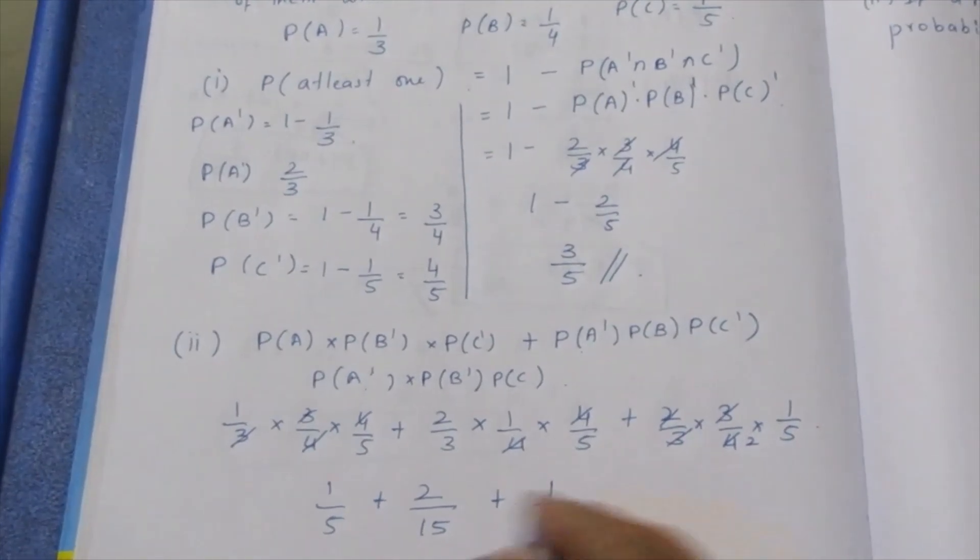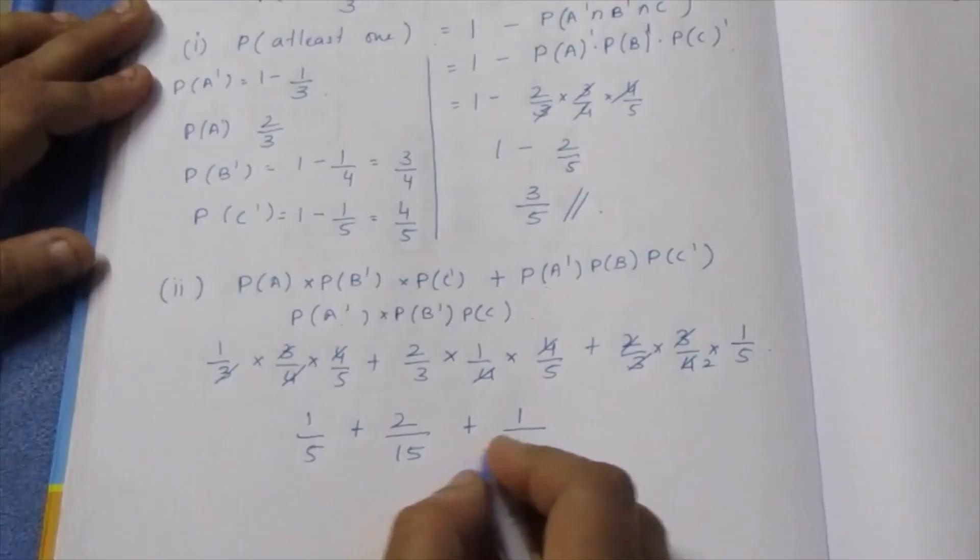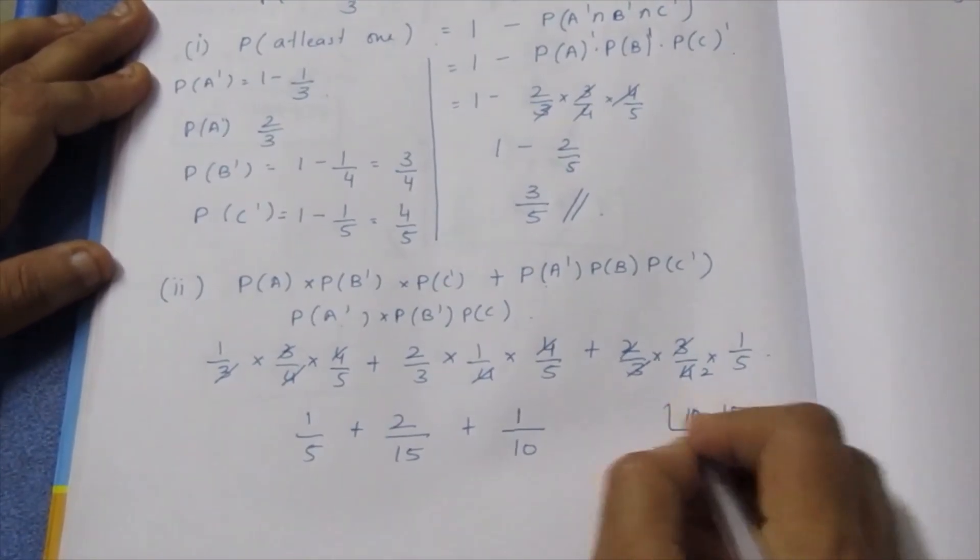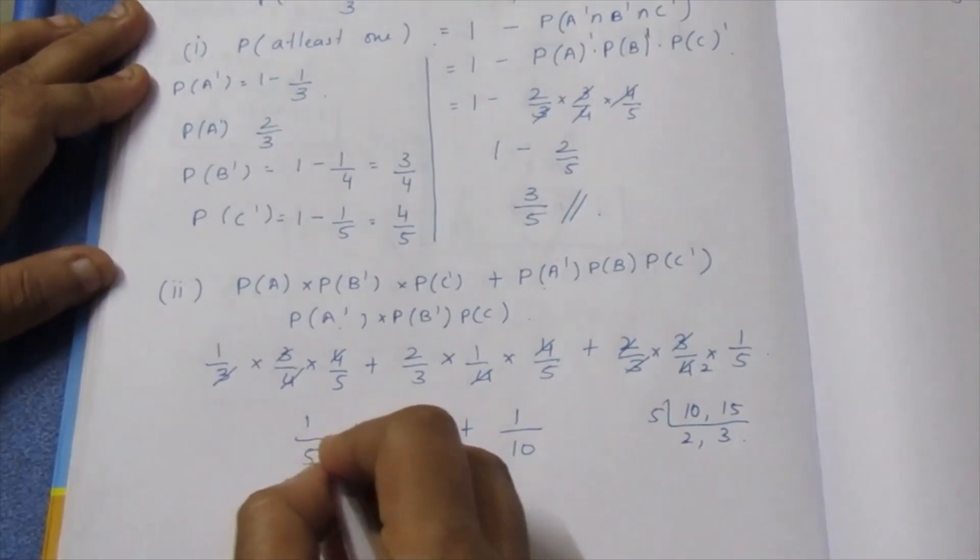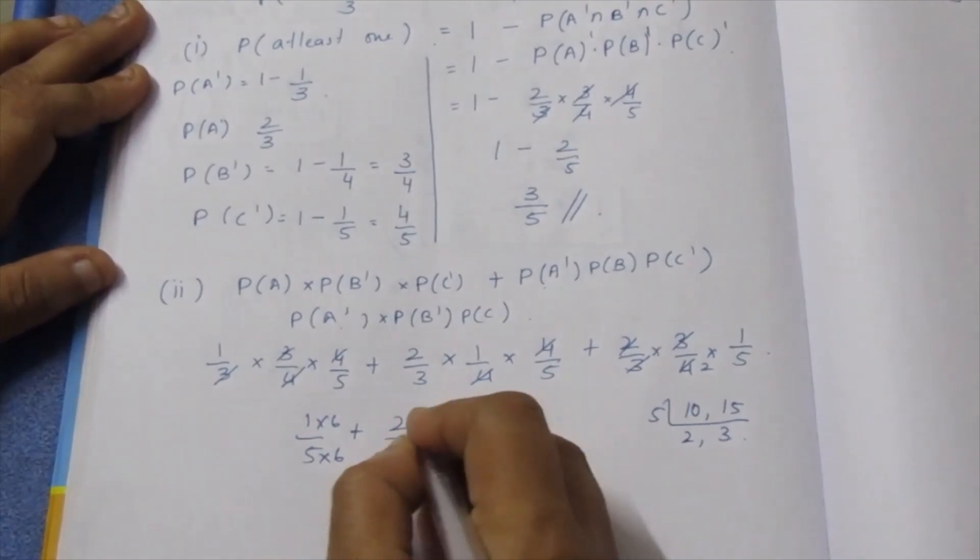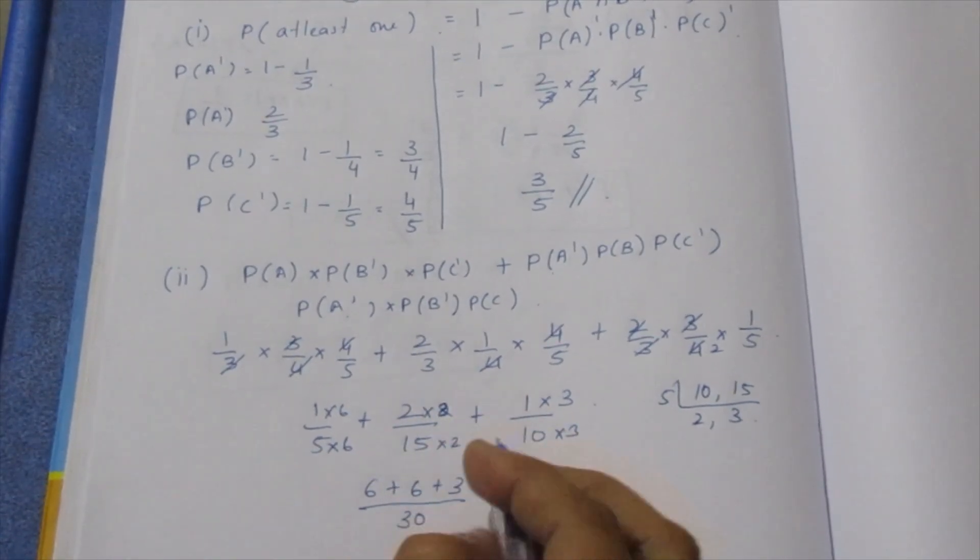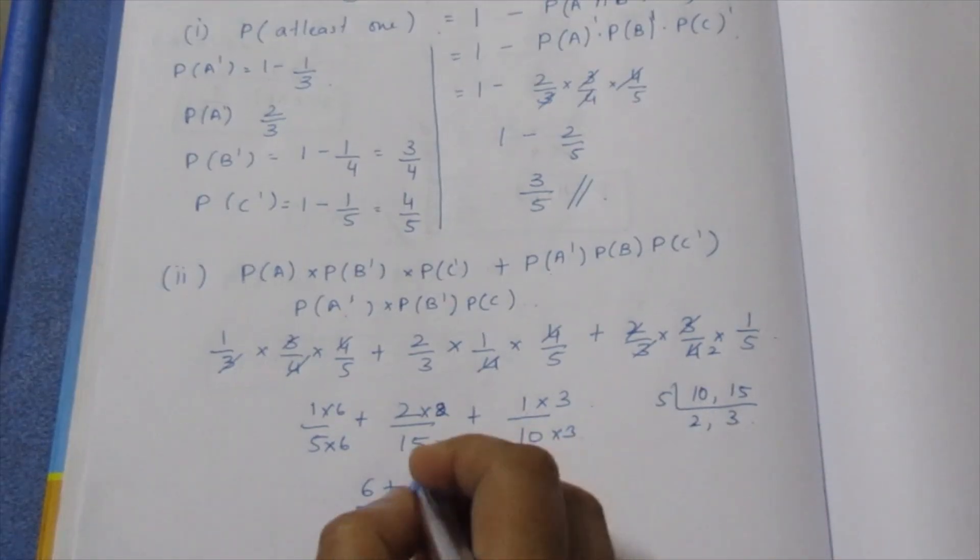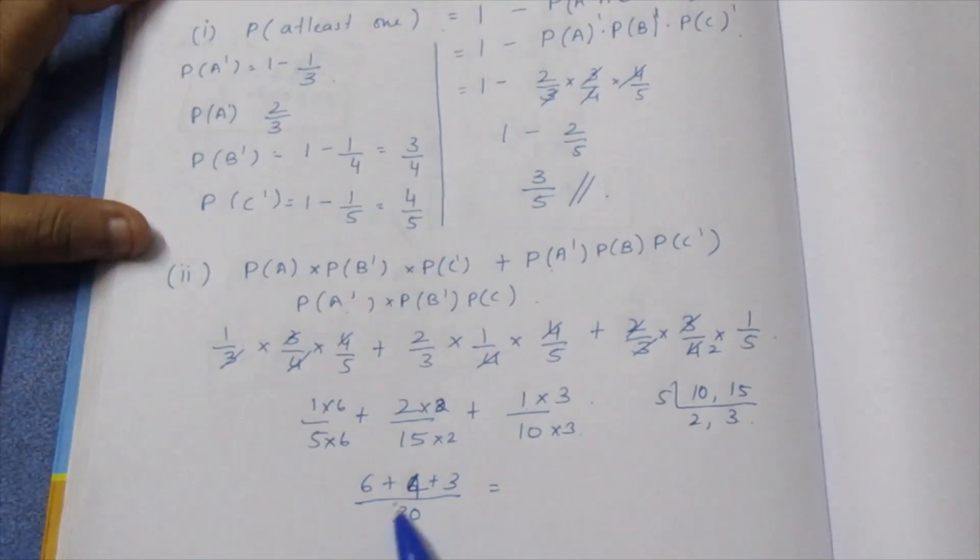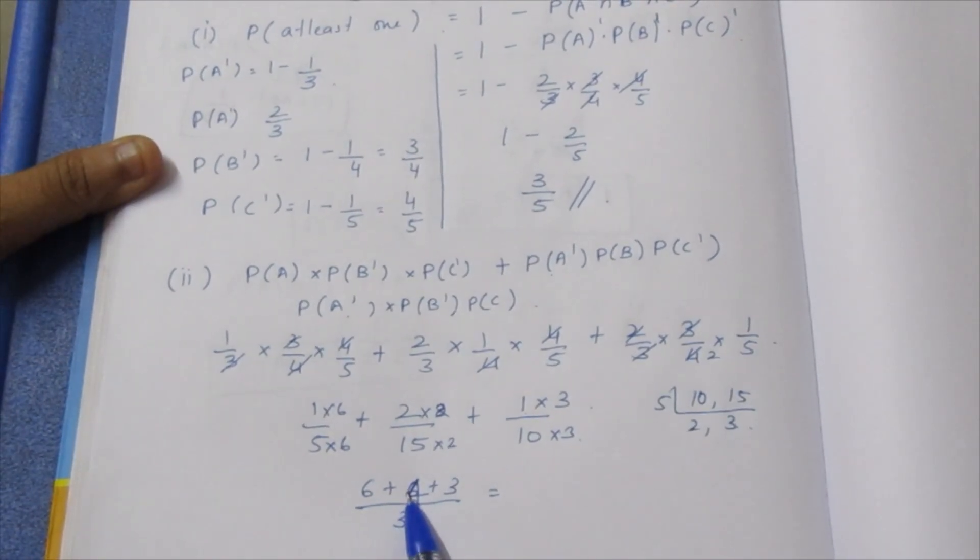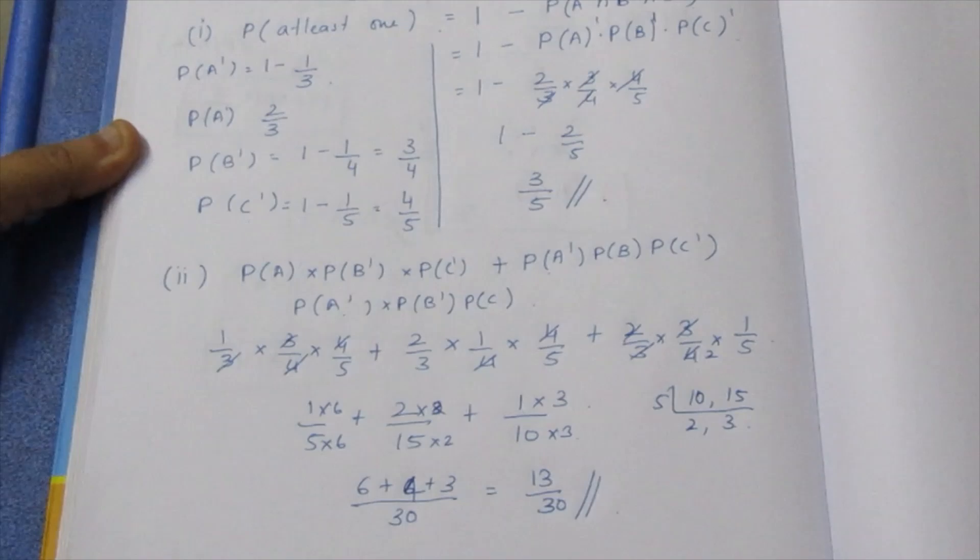1 by 5, 2 by 15, 1 by 10. So 5, 2, 3, LCM is 30. 5 times 6 is 30, 2 times 15 is 30, 3 times 10 is 30. So 6 plus 4 is 10 plus 3 is 13. So 13 by 30 is the final answer for the second subdivision.